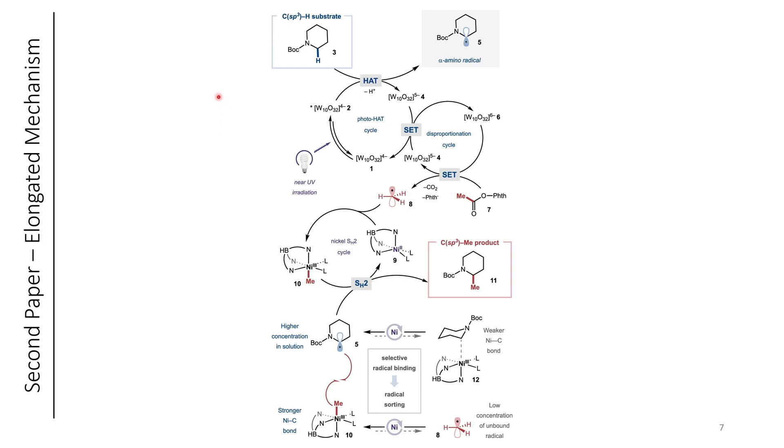So you may not be familiar with decatungstate chemistry. Decatungstate is a photocatalyst, which can readily abstract hydrogen atoms from weak C-H bonds. One example is the alpha position of this N-Boc amine. The photocatalyst, once excited, is able to abstract this hydrogen atom, forming a carbon-centered radical. The decatungstate still goes through some disproportionation, and eventually reaches the ground state of the catalyst, although it can do some other chemistry, which will be taken advantage of in this case as well.